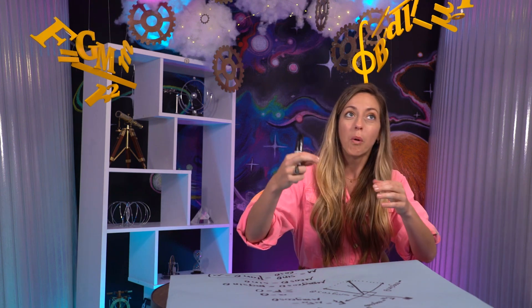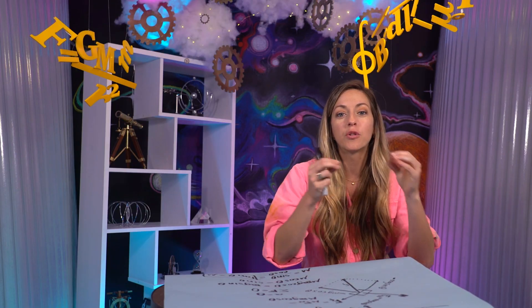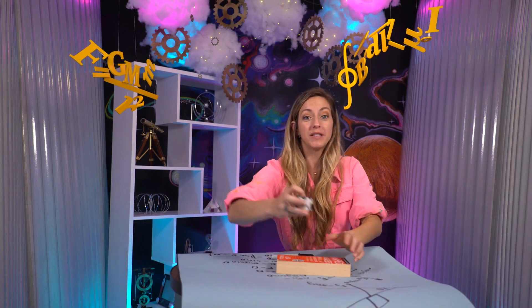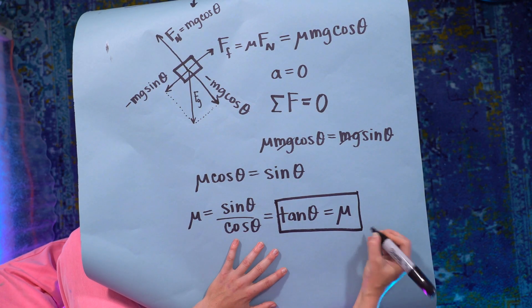That's a simple expression for the coefficient of static friction between two surfaces, and we just came up with a super quick, easy way to find it. To measure the coefficient of friction between two surfaces, slowly lift your ramp to a steeper and steeper angle and stop at just the moment the object starts sliding down. That'll be close to the Goldilocks angle where gravity has just barely enough strength to overcome friction. Then take the tangent of that angle, and you've measured the coefficient of friction.